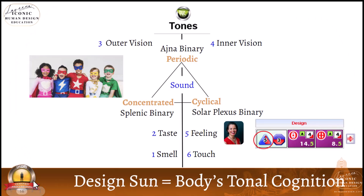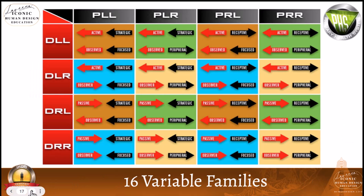Here we see the design sun and the tonal cognitions. You're going to get a video that explains each of your cognitions from the purest potential — not taking into account where it is in the body graph, but just the purest potential of the tones, your tonal cognition. That's what you're going to get as part of this program.